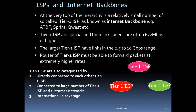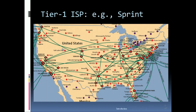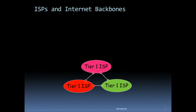Tier one ISPs are also characterized by being directly connected to each other. Each tier one ISP is also connected to a large number of tier two ISPs and customer networks, and they are international in coverage. You can see this in the diagram below — the Sprint example shows a tier one ISP connected across the whole internet.